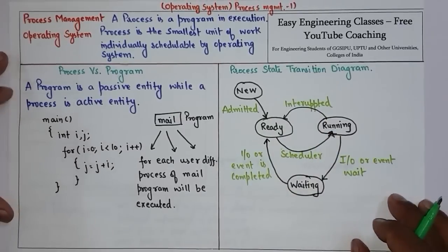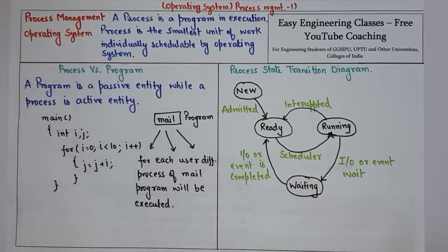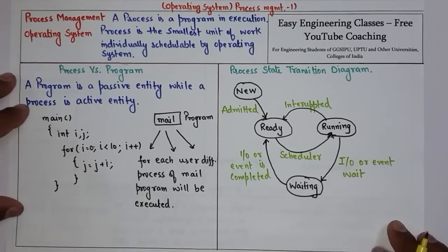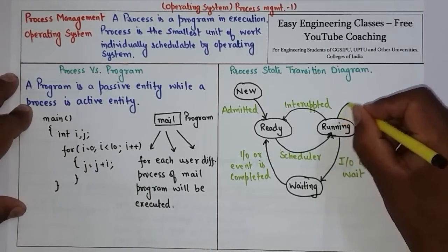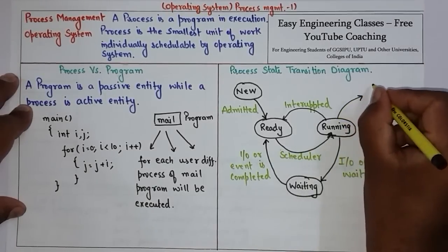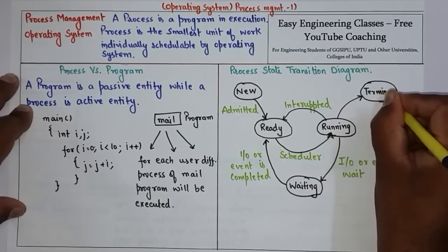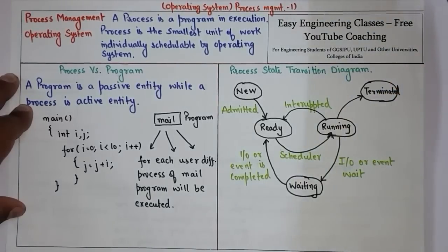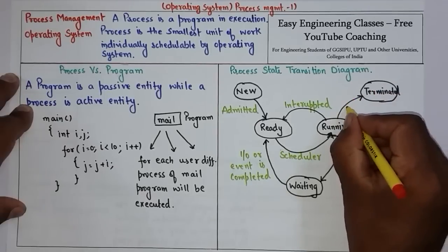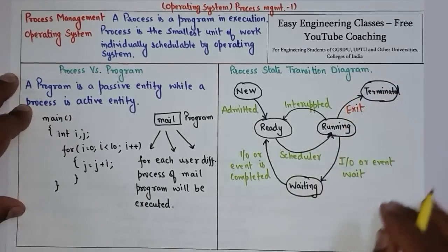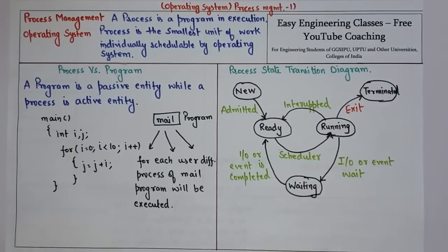Up until now the process has been in execution mode. When the process completes its work it has to be terminated, and it goes from the running state to the terminated state. The system call or process command for this is exit. So the process gets terminated and the system call is exit. That is the basic process state transition diagram, covering the new, ready, waiting, running, and terminated states.